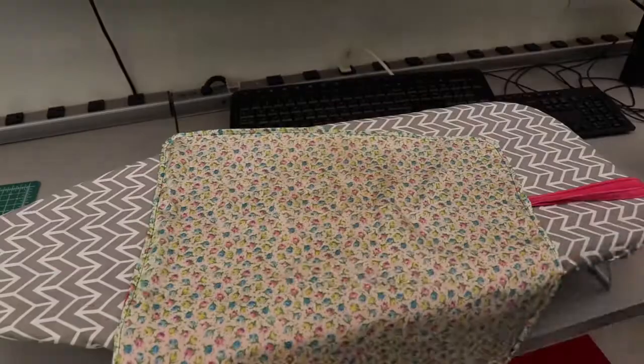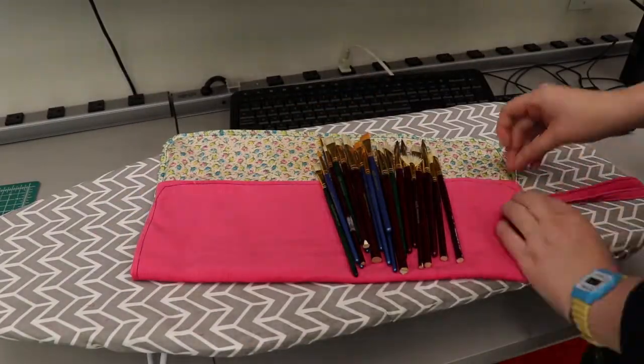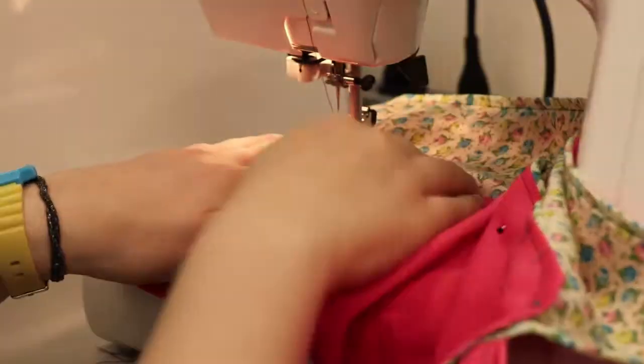Now I'm going to create my pocket. I laid out my brushes to get a general idea of how I wanted things. Then I pinned the two sides down and pinned about every inch or so where I'd sew a line. I sewed it all up and voila!